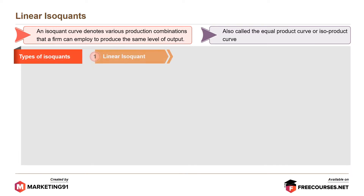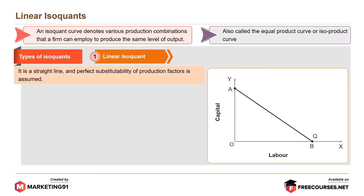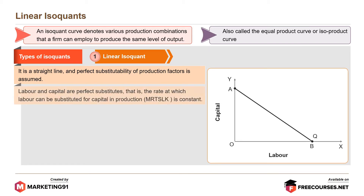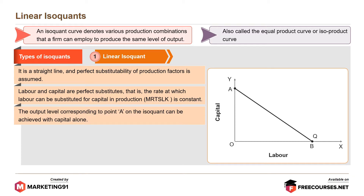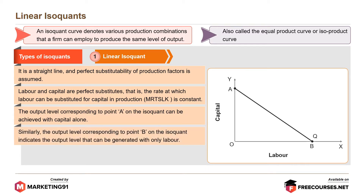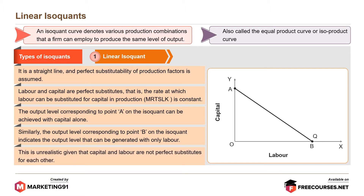Types of isoquants. First, Linear Isoquant: it is a straight line and the perfect substitutability of production factors is assumed. Labor and capital are perfect substitutes — that is, the rate at which labor can be substituted for capital in production is constant. The output level corresponding to point A on the isoquant can be achieved with capital alone, and point B indicates the output level that can be generated with only labor. This is unrealistic given that capital and labor are not perfect substitutes for each other.